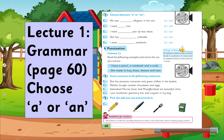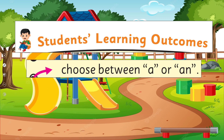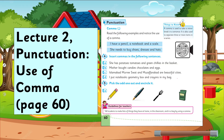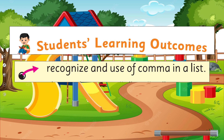In Lecture 1, under the title of Grammar, we learn to choose 'a' or 'an,' and we'll cover the SLO to choose between 'a' or 'an.' Lecture 2, under the title of Punctuation, we learn to use a comma, and we'll cover the SLO to recognize and use a comma in a list.